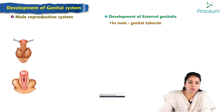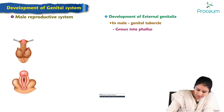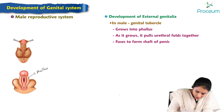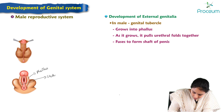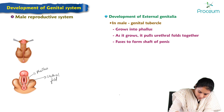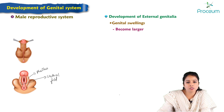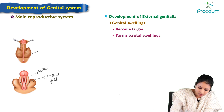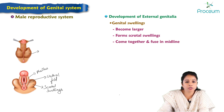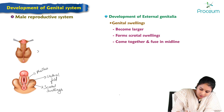The genital tubercle grows as a phallus, and as it grows it pulls the urethral folds together. These folds fuse in the midline to form the shaft of the penis. Meanwhile the genital swellings become larger to form the scrotal swellings, which come together and fuse in the midline — you can see the line of fusion in the midline.